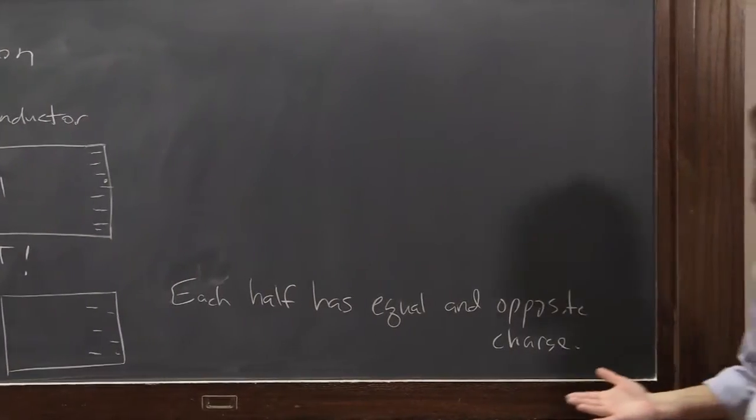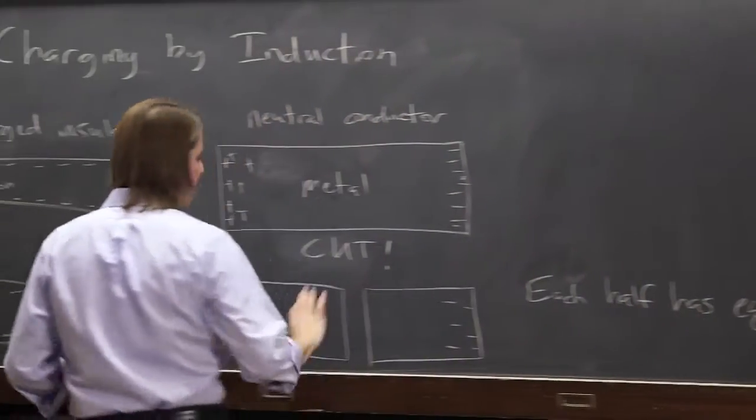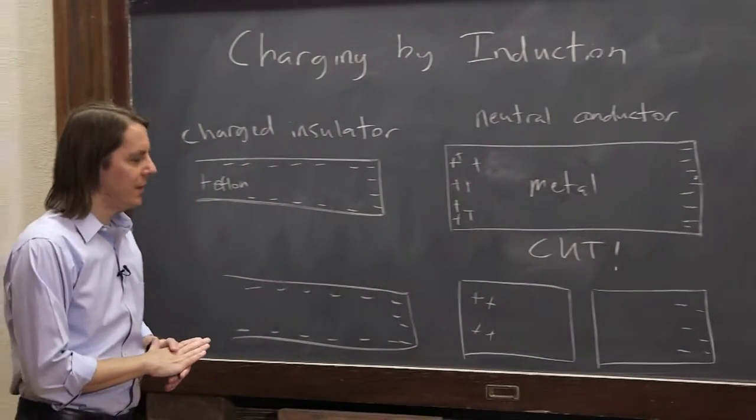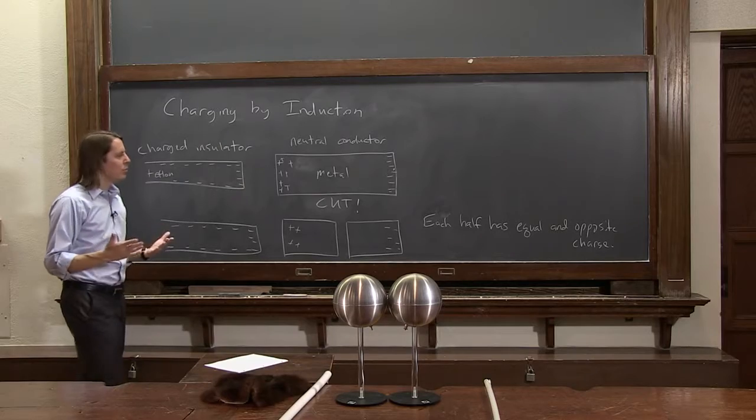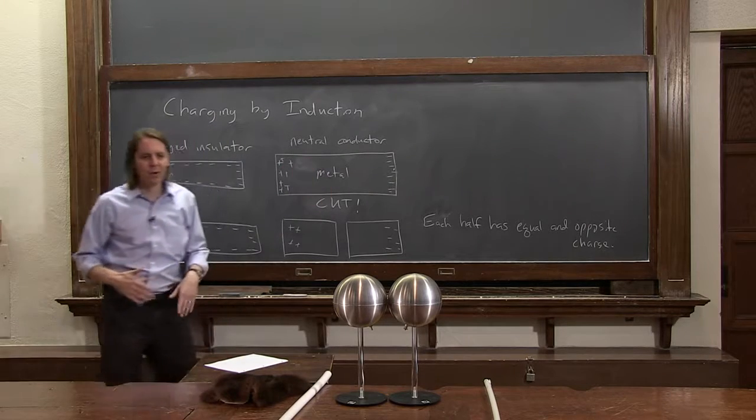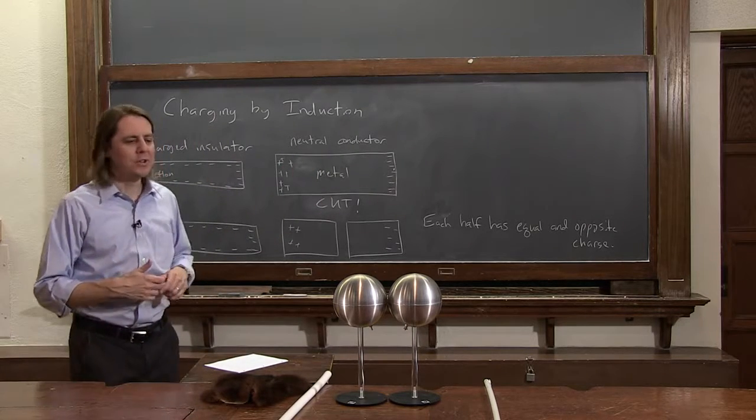So now they're both charged. In fact, we charged up two things. We charged up this piece of metal positive and that piece of metal negative. Now in the real world, you don't charge by induction by cutting pieces of metal. Cutting metal is very hard. There's other ways that you do it.